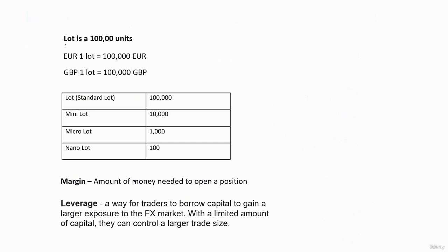Now let us see what a lot is. A lot is 100,000 units of any item. For example, one lot of EURUSD is equal to 100,000 of EURUSD, and one lot of GBP is equal to 100,000 of GBP. The standard lot is 100,000 units.